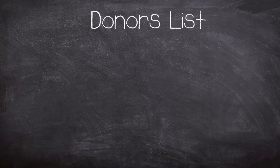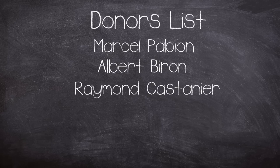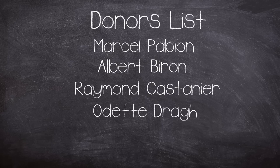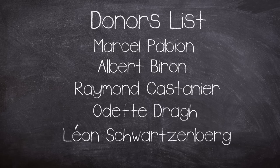The bone marrow grafts were performed by Georges Maffe, an oncologist, and made use of donors that were all French, including Marcel Pabian, Albert Byron, Raymond Castaner, and Odette Draff. The fifth donor was Leon Schwartzberg, a member of Maffe's own team.